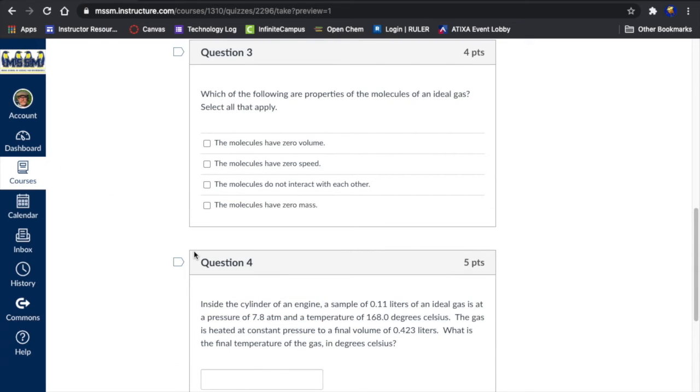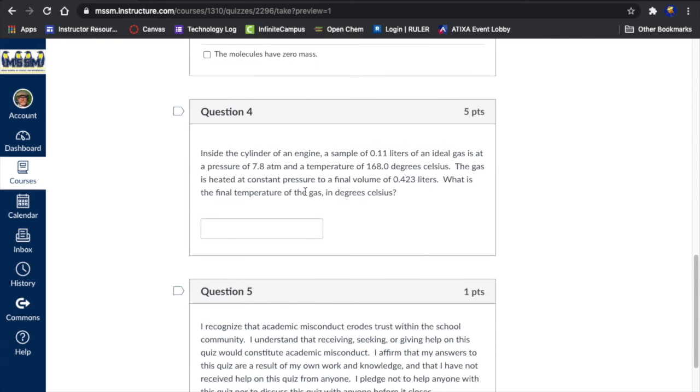Which of the following are properties of an ideal gas? Molecules have zero volume. Yes, that's necessary for points. Molecules have zero speed. That doesn't make any sense. They won't be able to collide with any surfaces or exert pressure if they have zero speeds. That can't be it. Molecules do not interact with each other. Yes, that is one of the stipulations of an ideal gas. Zero mass. No, again, that doesn't make any sense. If they have zero mass, they won't be able to apply a force to a surface when they contact it. So the only two that are correct are molecules have zero volume and they do not interact with each other.